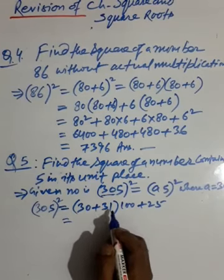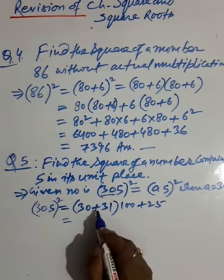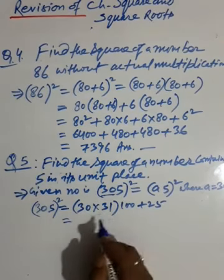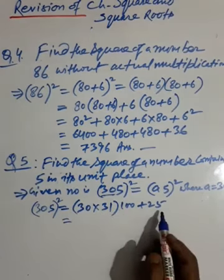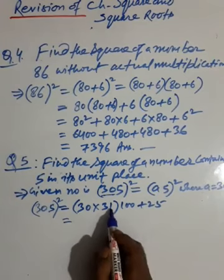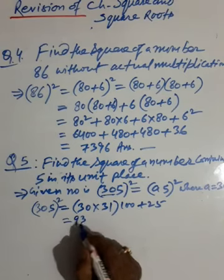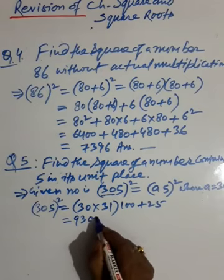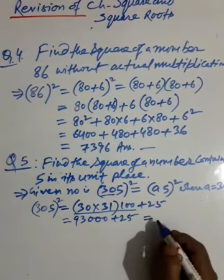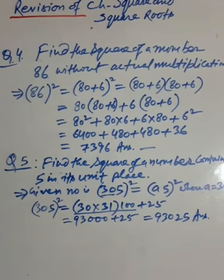Multiplying: 30 × 31 = 930. So 930 × 100 + 25 = 93000 + 25 = 93025. So this is the answer. This way you can find the square of any number with 5 as its unit digit.